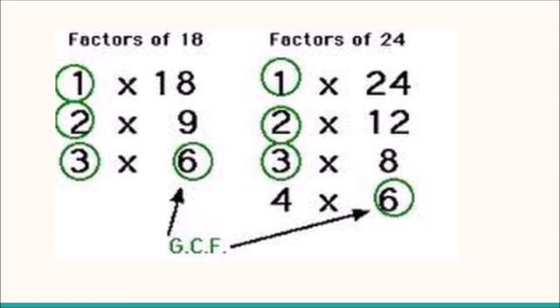Here we will see another example of how to find the GCF of the numbers 18 and 24. The factors of 18 are 1, 2, 3, 6, 9, and 18. The factors of 24 are 1, 2, 3, 4, 6, 8, 12, and 24.